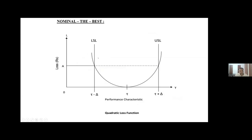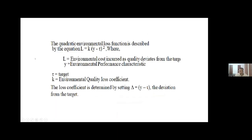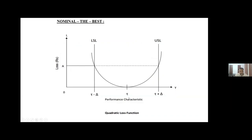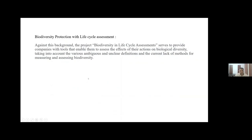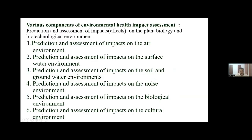This is called nominal-the-best — the environmental quality function quadratic equation. The equation is L = K × (Y − T)², with T minus delta and T plus delta as the specification limits. This particular project has considered the environmental quality loss function loss coefficient of nearly 0.7 — a 0.7 coefficient because of the more loss. This loss is to be mitigated by means of eco-friendly technology.